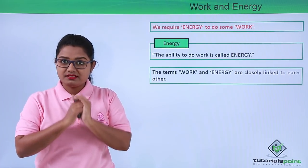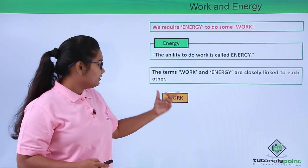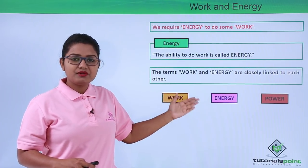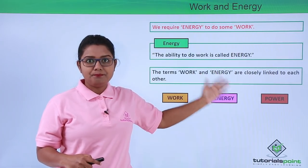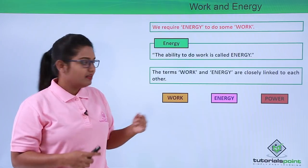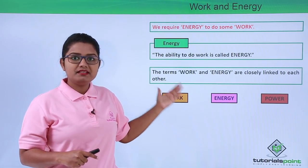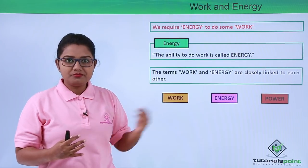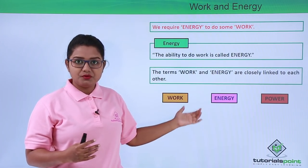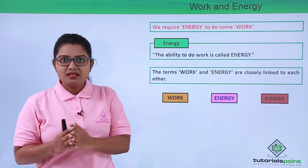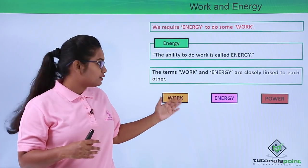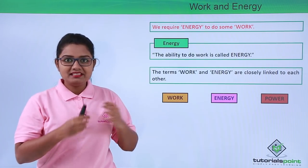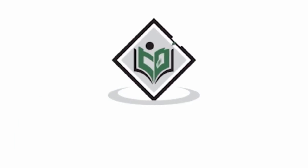In this chapter, we are going to study three terms: the first is work, the second is energy, and the third is power, which is the rate at which work is performed. These are the three terms we will be focusing on in this chapter, along with the different concepts linked to work, energy, and power. In the videos to come, we will cover these terms and concepts in detail. With this, we have come to the end of this video — thanks for watching TutorialsPoint, simply easy learning.